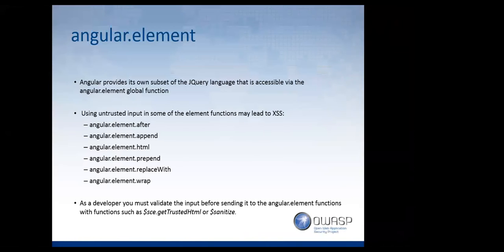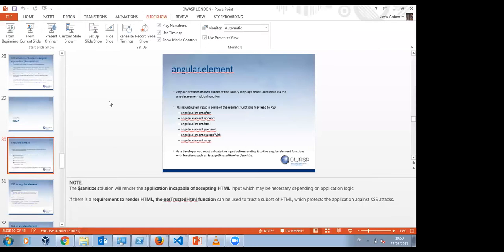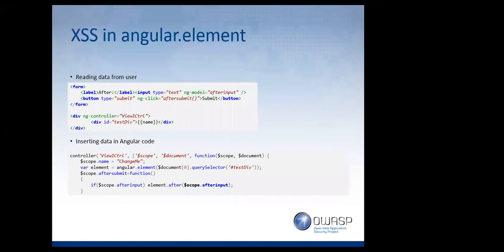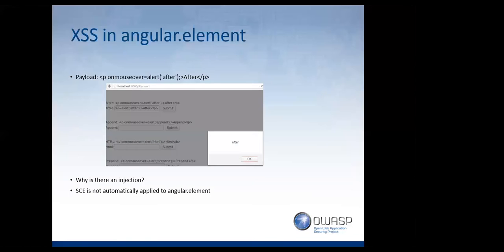There's also AngularElement, which is a subset of jQuery — it allows you to access some jQuery features. If user input is indirectly added via append and similar methods, you can execute arbitrary JavaScript. As a developer, you really need to validate input before sending it to any of these functions, and you can do this with internal Angular features through SCE.getTrustedHtml or $sanitize. The vulnerability exists because it's not doing strict contextual escaping — it's treating input as arbitrary HTML markup.